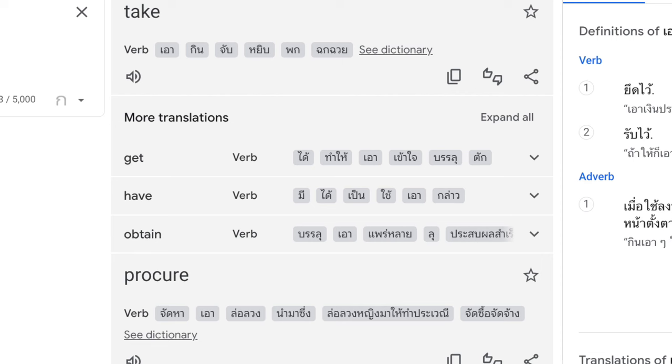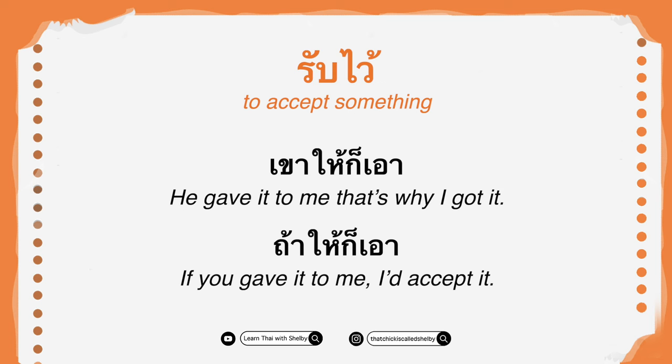The first meaning is รับไว้ — to accept something physical. Example: เขาให้ก็เอา — he gave it to me, that's why I got it; whatever that thing is, I had to accept it because he gave it to me. Next: ถ้าให้ก็เอา — if you gave it to me, I would accept it. There's a connotation in this sentence — it could mean sex; it means if you consent or do it. ถ้าให้ก็เอา.